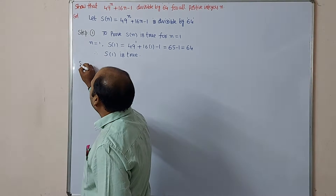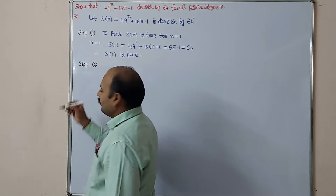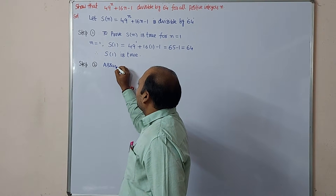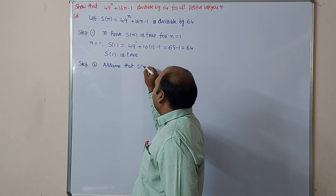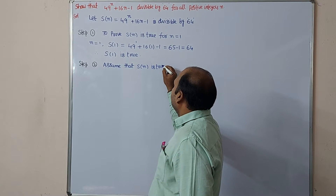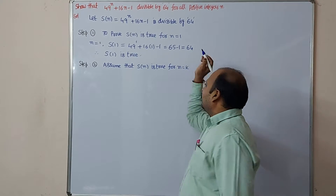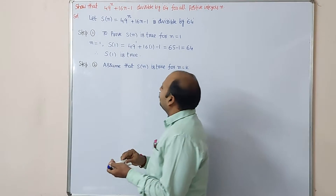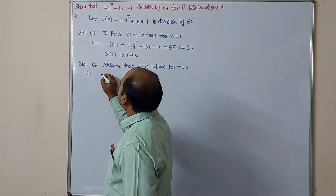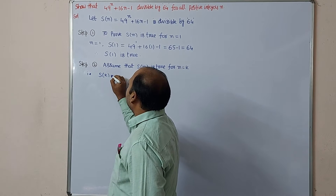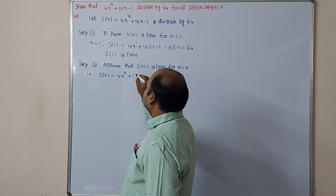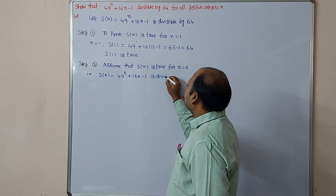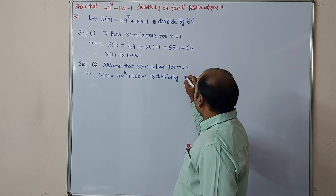Step 1 completed. Come to Step 2. In Step 2, assume that S of n is true for n is equal to k. That means wherever n is there, replace with k. That is: S of k equals 49 power k plus 16k minus 1 is divisible by 64.